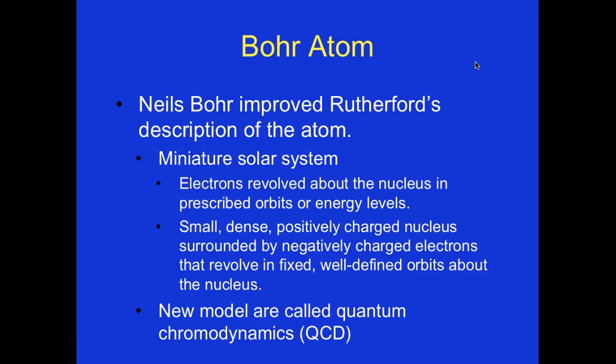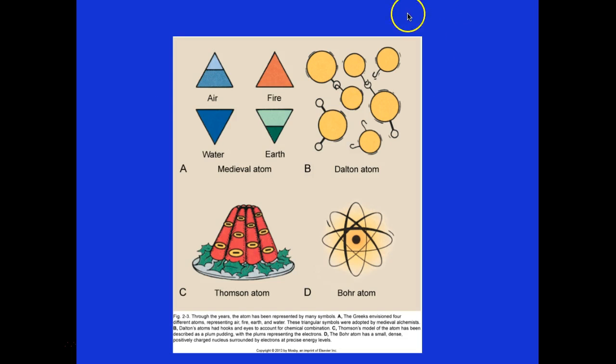Niels Bohr improved Rutherford's description of the atom, calling it a miniature solar system. Electrons revolve about the nucleus in prescribed orbits or energy levels — a small, dense, positively charged nucleus surrounded by negatively charged electrons revolving in fixed, well-defined orbits. Newer models are called quantum chromodynamics, or QCD. You can trace the history from the medieval four-element atom, to Dalton's hook and eye, to Thompson's pudding model with floating electrons, to the Bohr model which we use today.